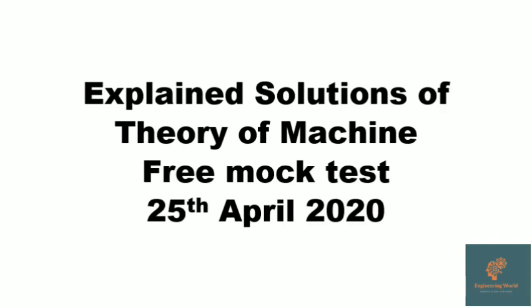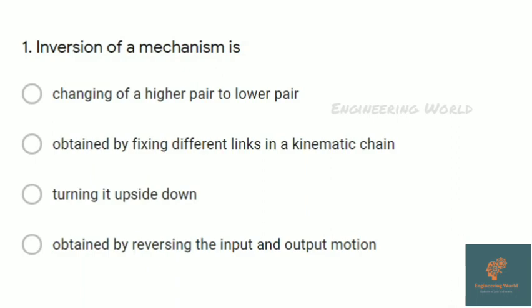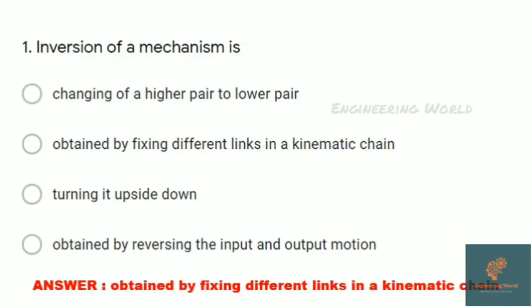The first question is: the inversion of a mechanism is? This is a most expected question for SSC JE and NLC and it's an easy one. The answer is: inversion is obtained by fixing different links in a kinematic chain.